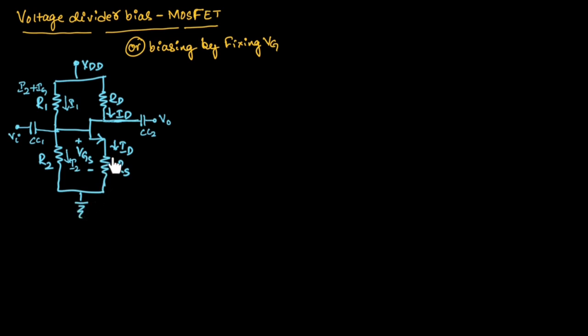This is the circuit for voltage divider biasing of MOSFET. Here, Rd is the resistance across drain or output resistance, Rs is the source biasing resistance, R1 and R2 are voltage divider bias resistors, and CC1 and CC2 are coupling capacitors.